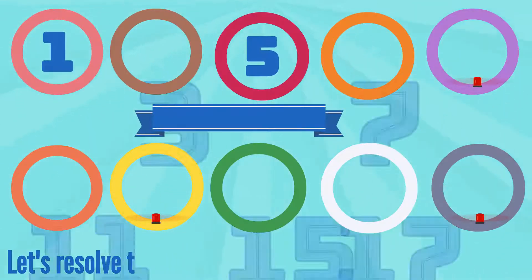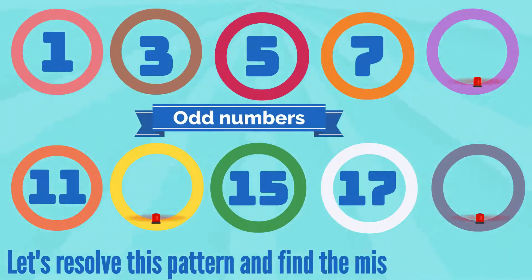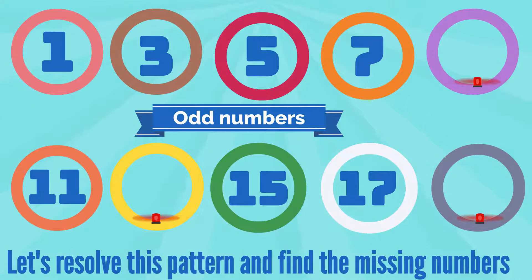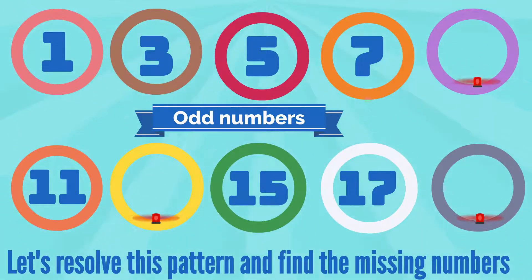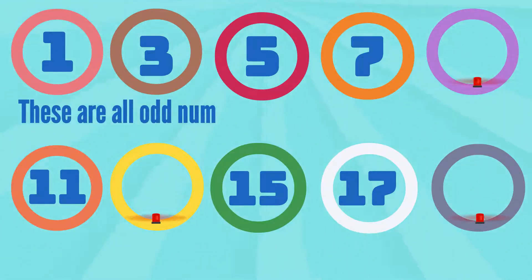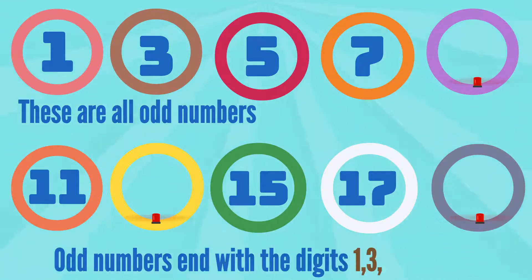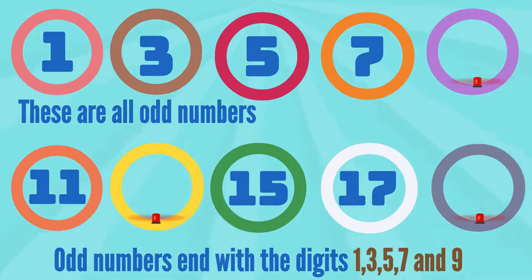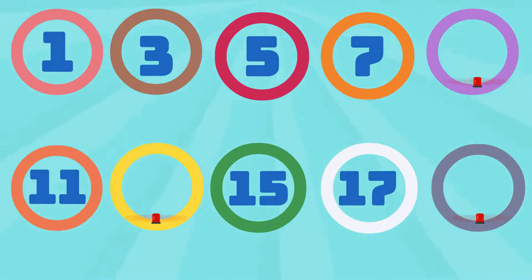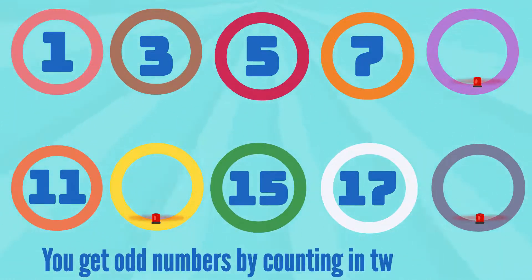This is an odd-numbers pattern. Let's resolve this pattern and find the missing numbers. Odd numbers end with the digits 1, 3, 5, 7, and 9. You get odd numbers by counting in twos from 1.